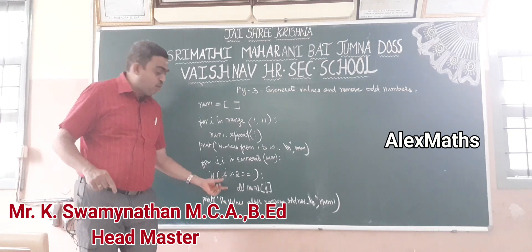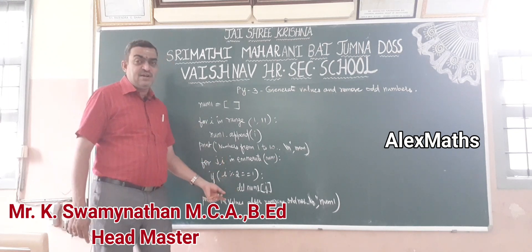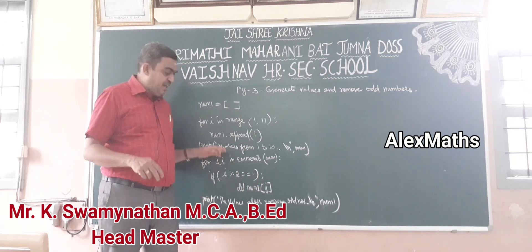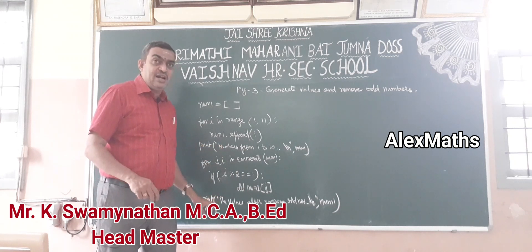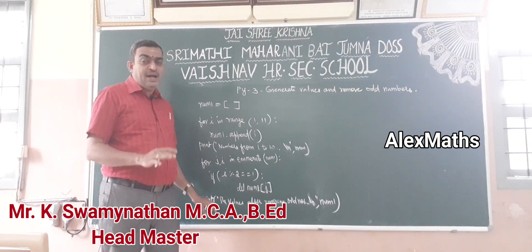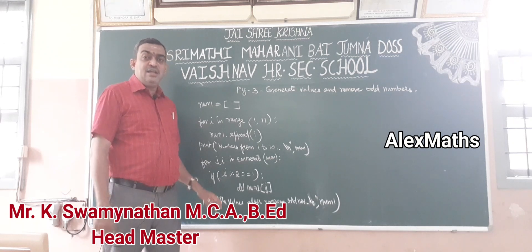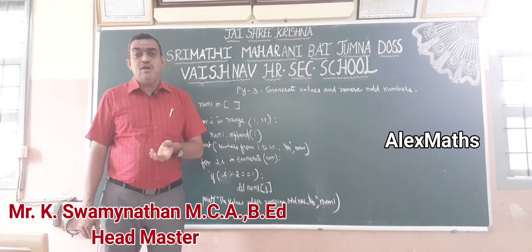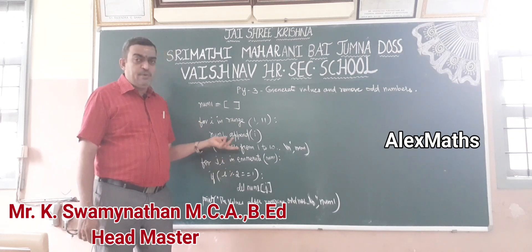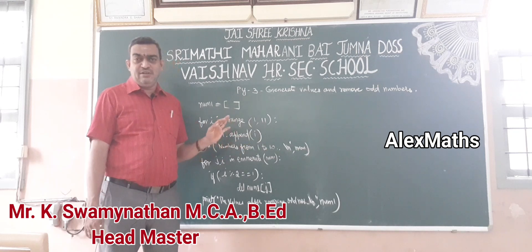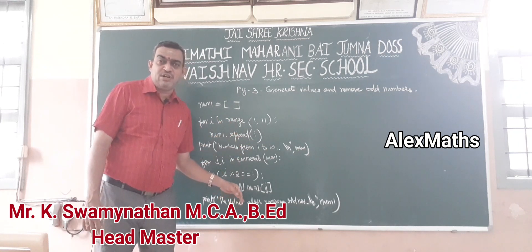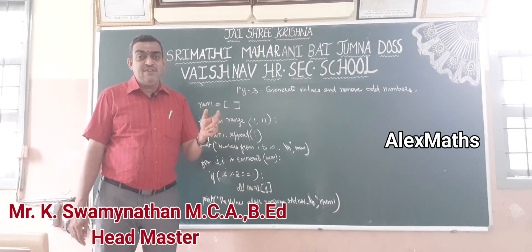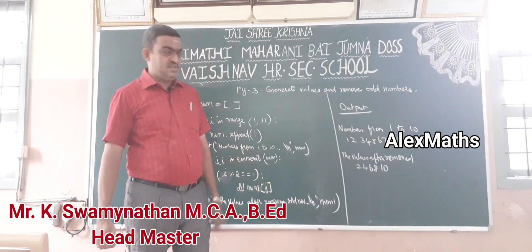This is a random problem. I will give a print statement and display the result. The elements generated are 1 to 10. If you have any doubts, you can go through the output in the YouTube description. That's it, thank you.